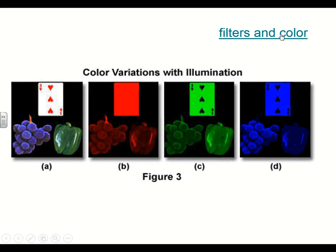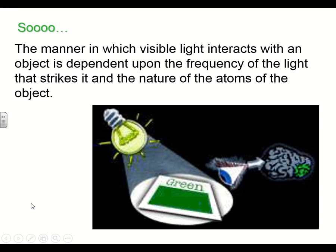There's a site where you can play with color filters. When you put a red filter on, this is what it looks like. A green filter changes it like this, and a purple or magenta filter changes it again. The color varies depending on what filter you have. The manner in which light interacts with an object depends on the frequency of the light that strikes it and the nature of the atoms in the object — some light gets absorbed, some gets reflected, and what gets reflected is what we actually see.